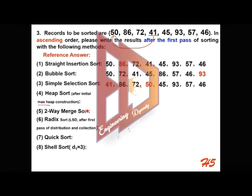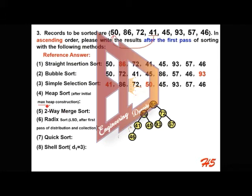The next method is heap sort. For the initial max heap construction, we first fill in the records one by one into the layout of a complete binary tree. Then, starting from the last non-leaf node, we perform sifting down. This node will first be checked — if it violates the max heap property, it will be exchanged or swapped with its left child.